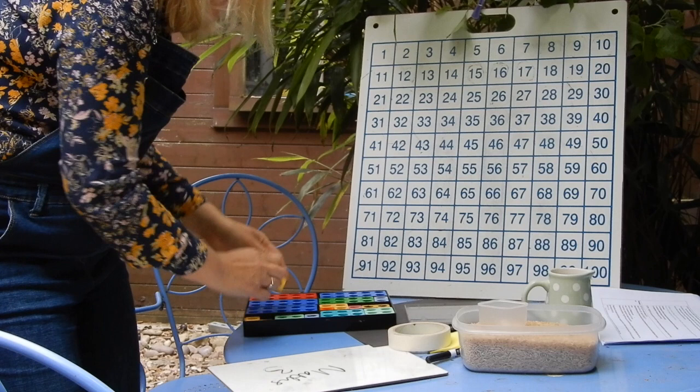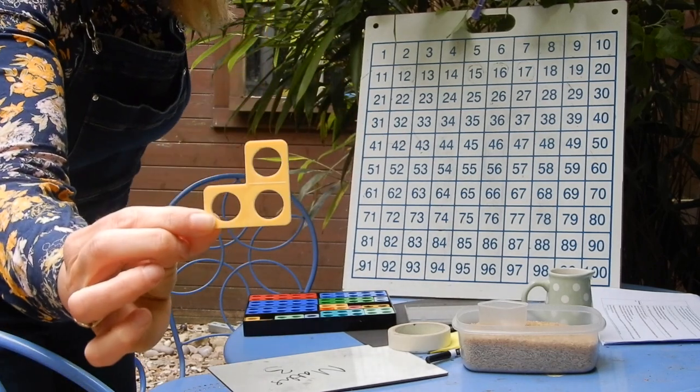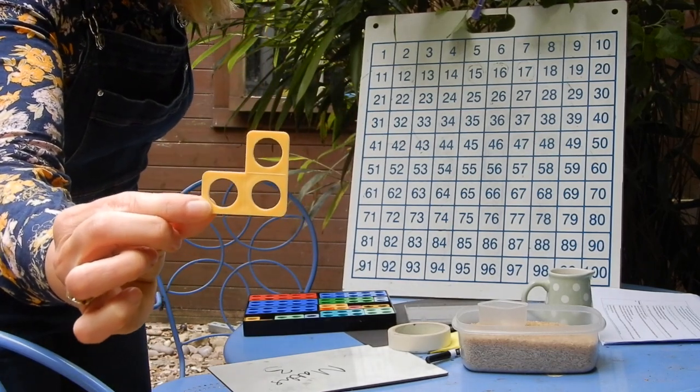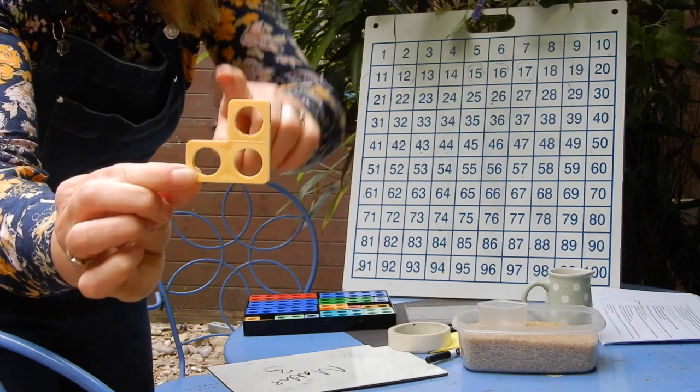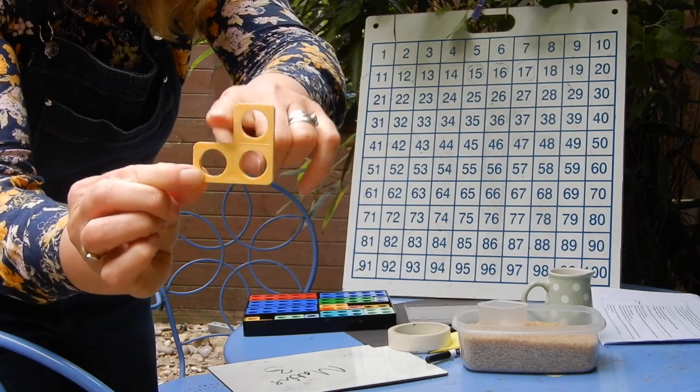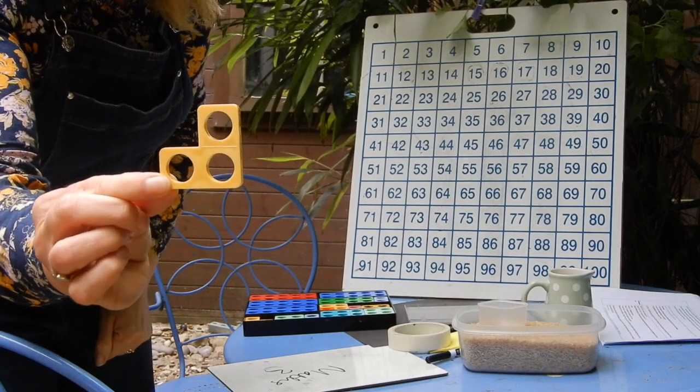Let's look at three. Here's my three. Is that odd or even? Three is an odd one. It's got a little nobble on the top by itself that doesn't have a partner. So three is an odd number.